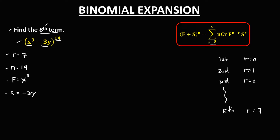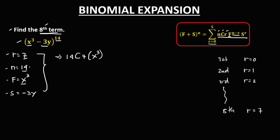Since we have these four values, we can find the value for this a-term. Using this formula, we have n choose r — so 14 choose 7 — times the first term, x to the power 3, to the power n minus r, which is 14 minus 7. Then times the second term, negative 3y, to the power r, which is 7.